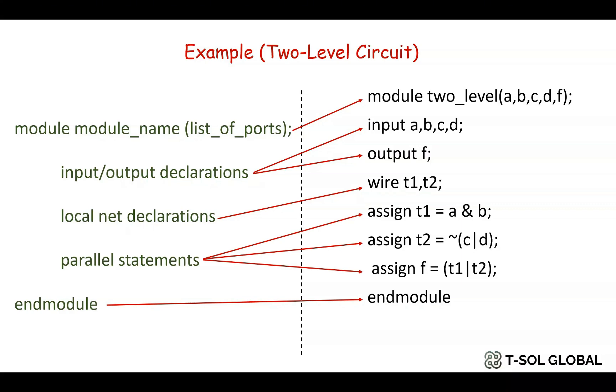Then we define the logics with assign command where the wire t1 is equal to a and b, where t2 is equal to not c or d, and lastly the output f is equal to t1 or t2. Finally we end the code with endmodule. You can also see the schematic of the logic.